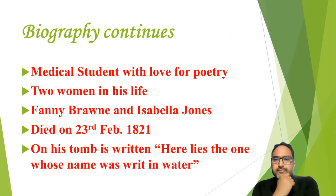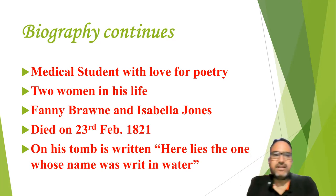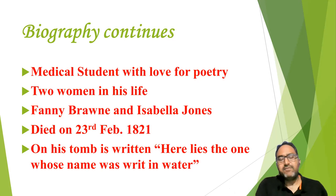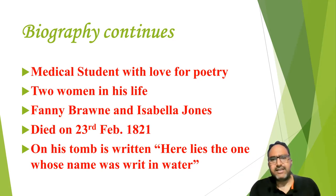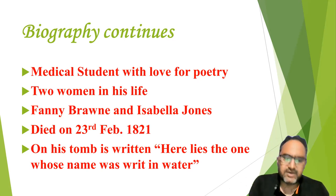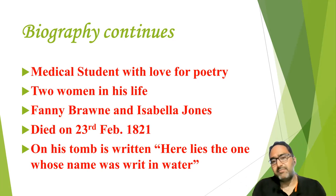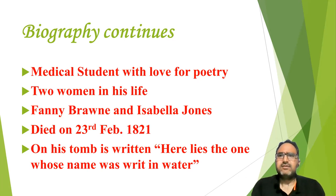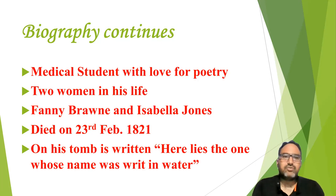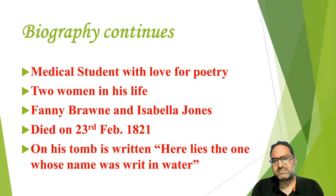After completing his schooling, Keats started working as an apprentice with a doctor. He was a medical student and worked as a helper to surgeons and physicians — dressing wounds and working in a hospital. But he had a love for poetry in him. Later, when he received his license to practice as a doctor, he decided to leave medical science and pursue poetry as a full-fledged profession. Though he was not very successful in the beginning, he later wrote masterpieces.